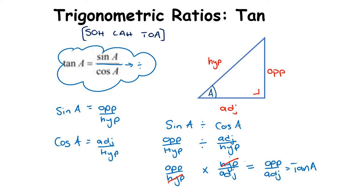Tan is another way to say slope. If we're talking about slope, we talk about rise over run, which is the same as opposite over adjacent. In the unit circle, tan is the slope of OP, where O is the center (0,0) and P is the point on the circle.